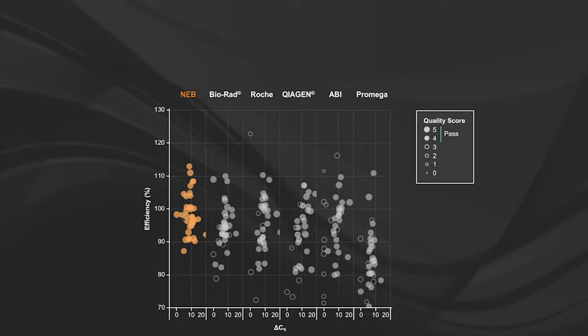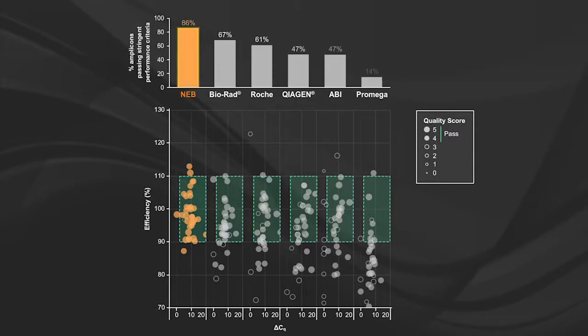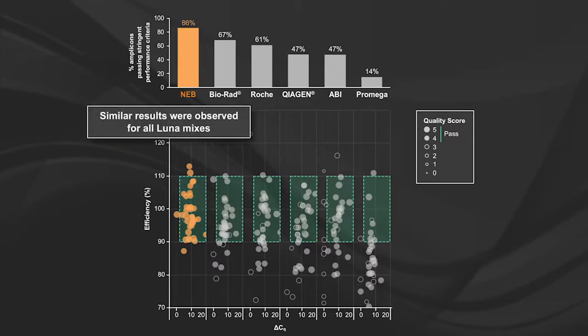On a total of 18 unique genomic and cDNA targets run in triplicate by two different users. Across these 36 experiments, we see the strong performance of the Luna mix, where 86% of the experiments yielded high-quality results that fall in the box. Similar results were observed for all Luna mixes, and these dots-in-box visuals can be found on each of the individual product pages.